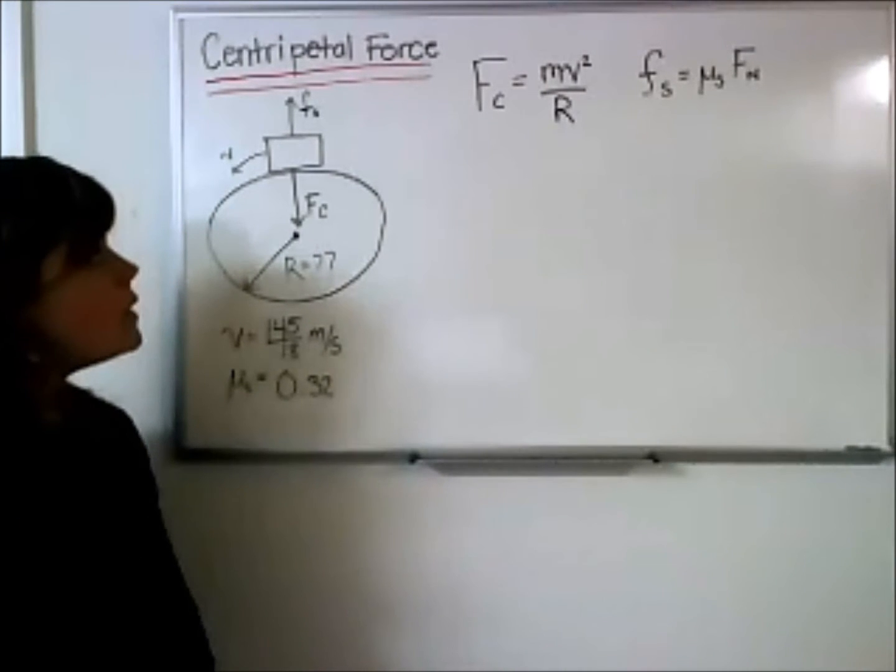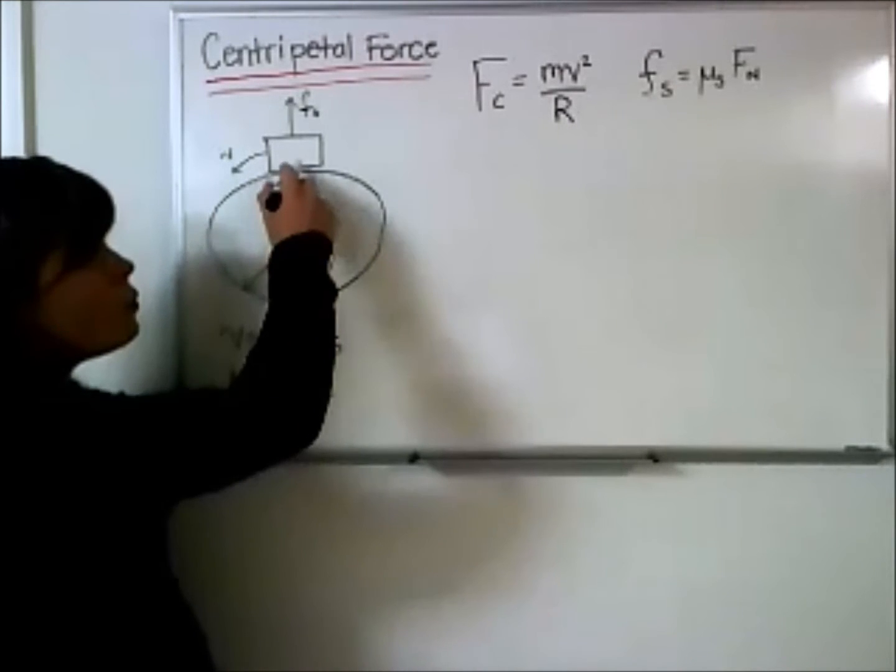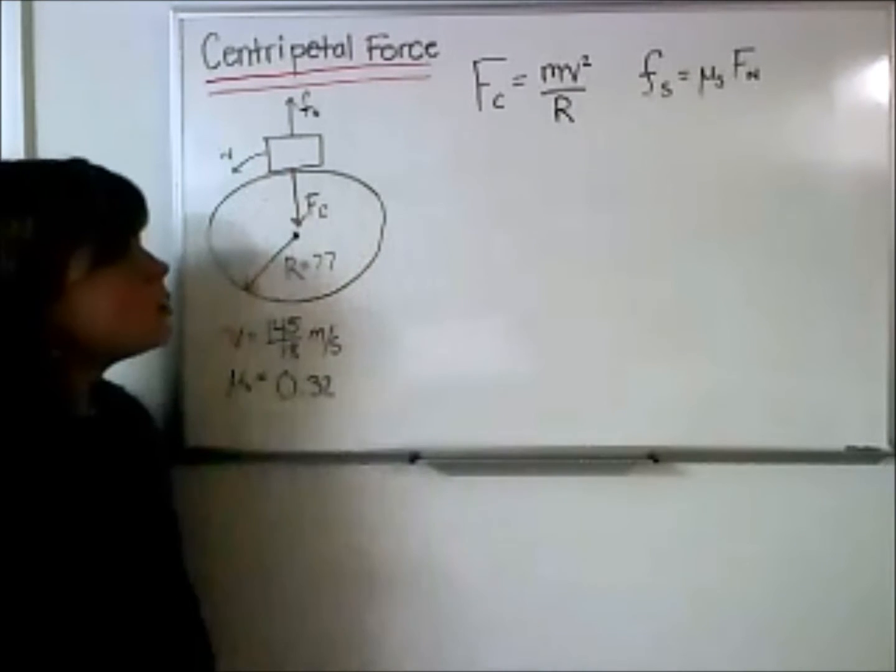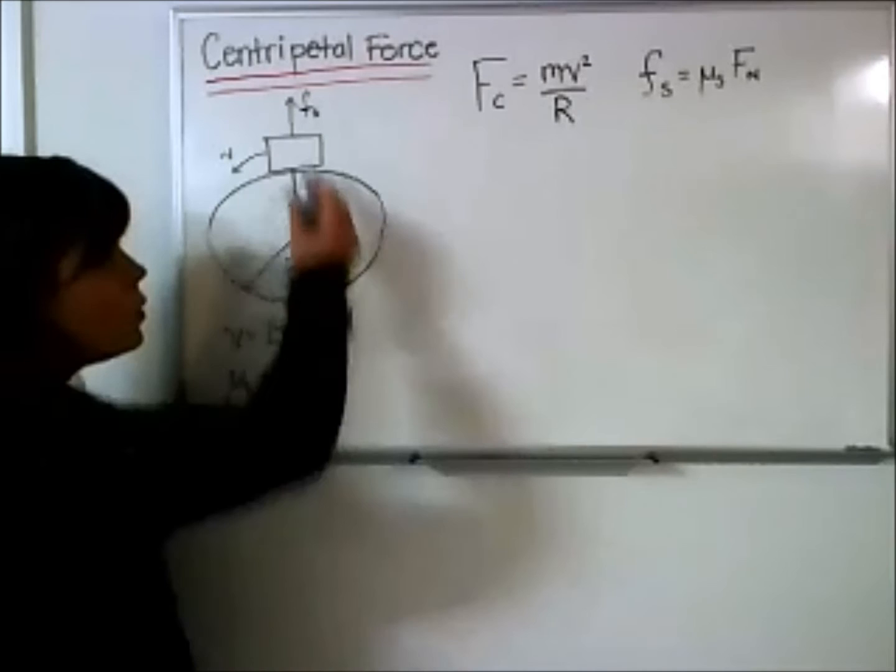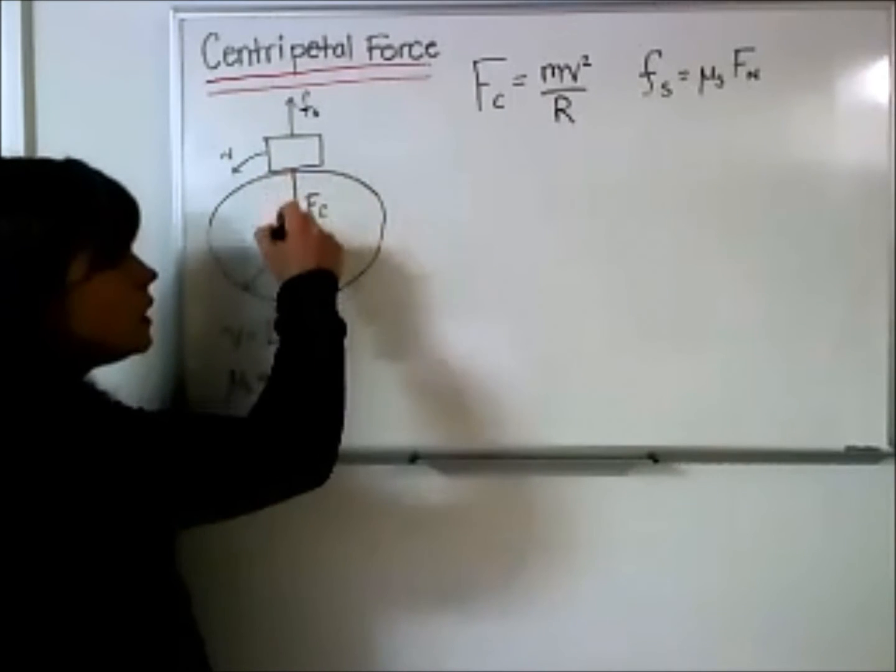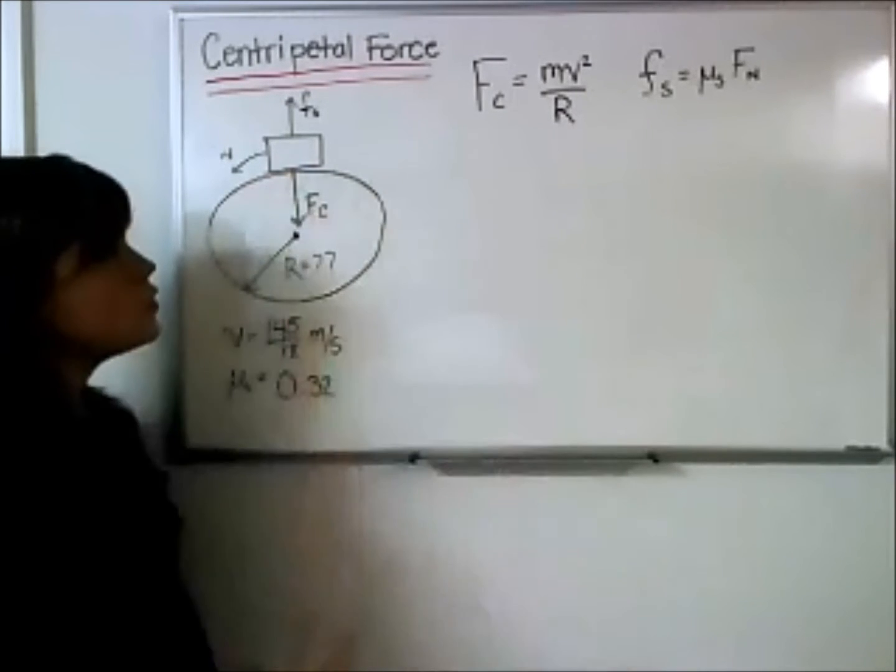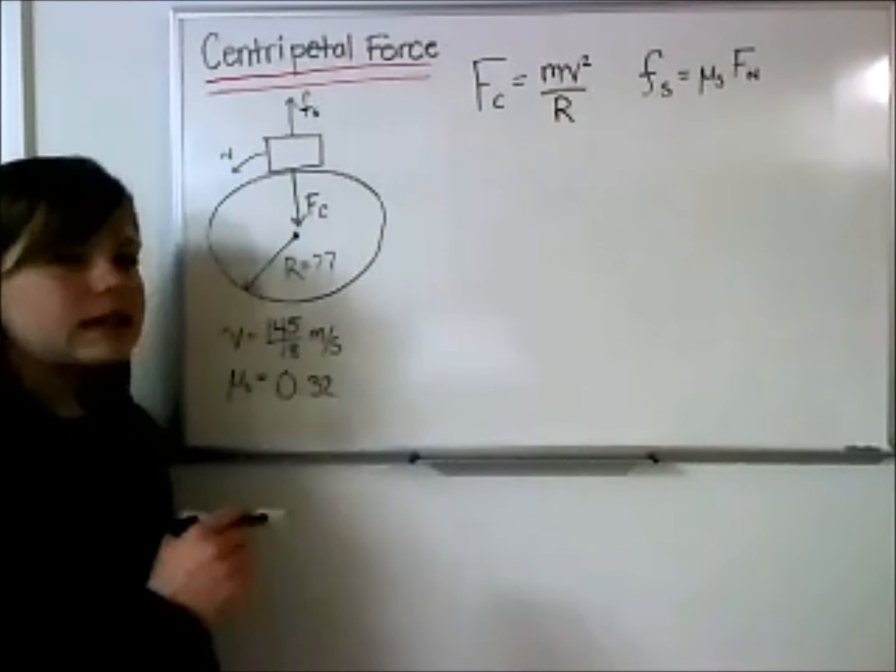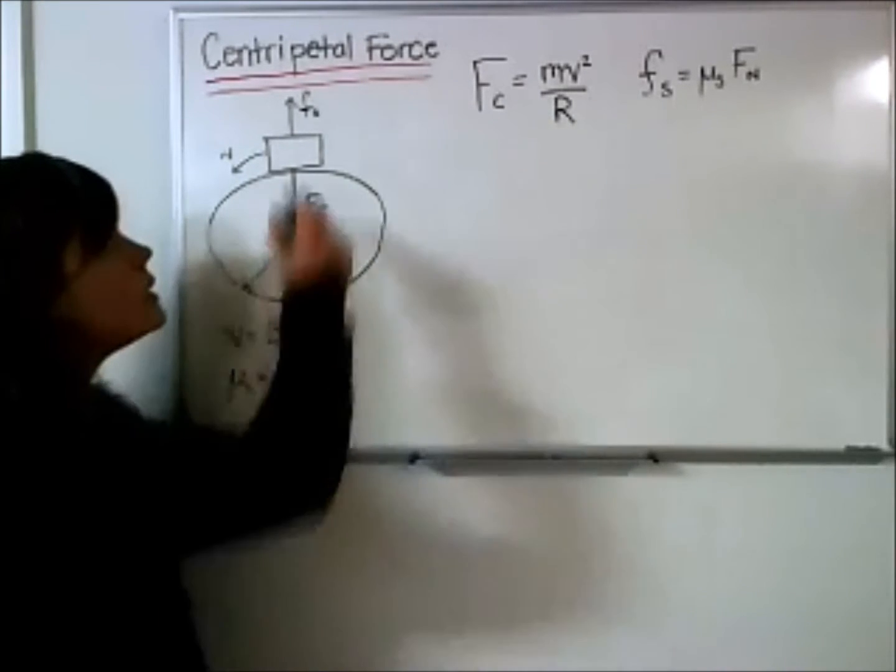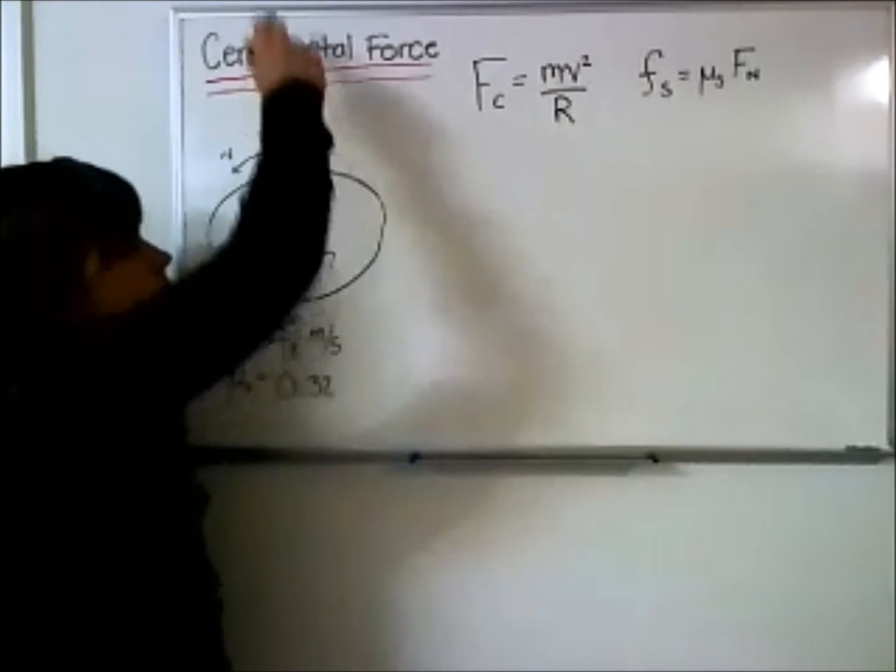But what we do have is we have a radial force, which is this centripetal force, which is pulling this car in towards the center of the circle of the track. And acting against that is this frictional force, which is pulling out and away.